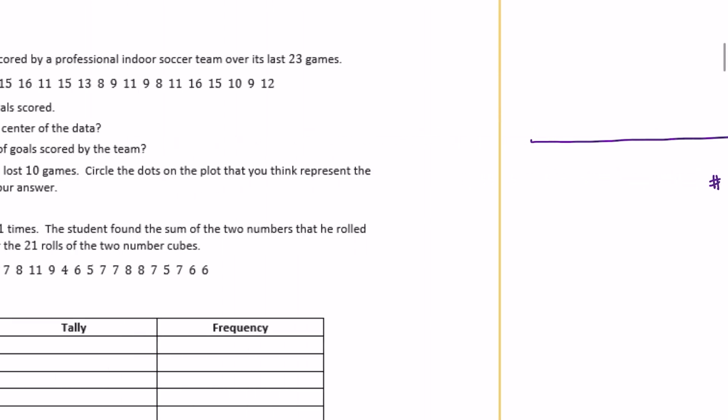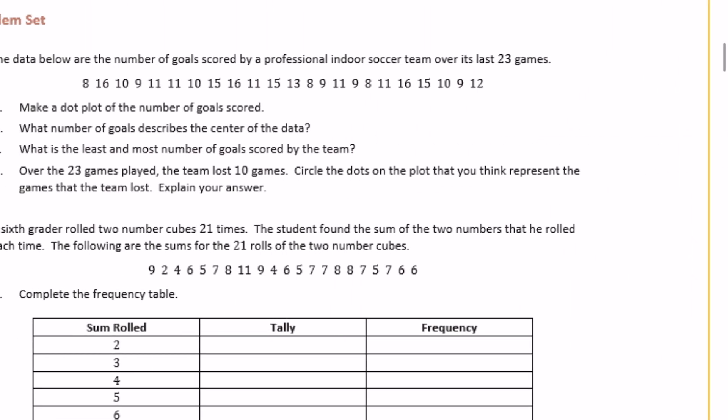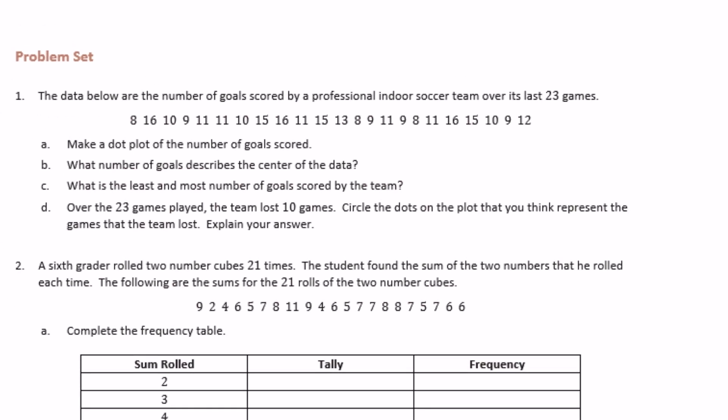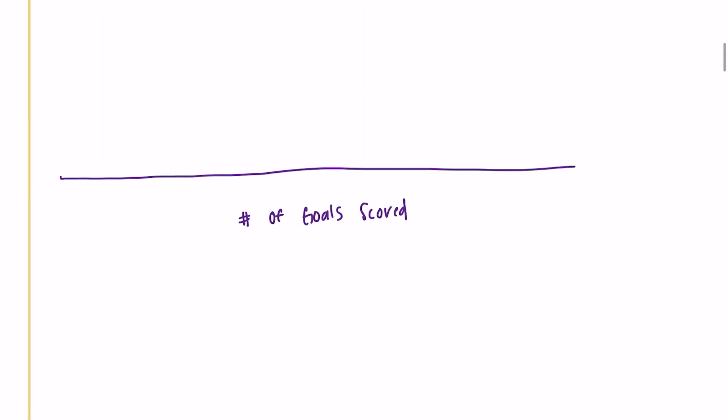So I'll label this down here number of goals scored and then I'll put a title at the end once I see how high it goes. So let's see what our lowest is. Right now the lowest number of goals I see is 8, I don't see anything lower than 8 and the highest I see, maybe 16, yeah I don't think anything higher than 16.